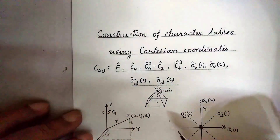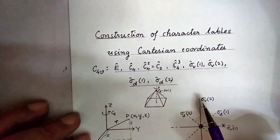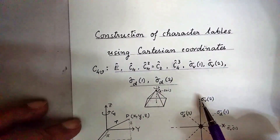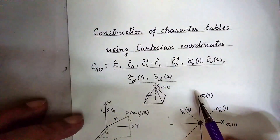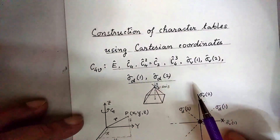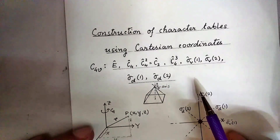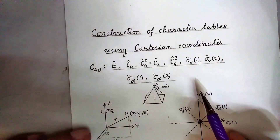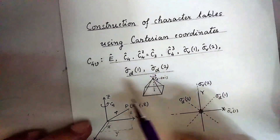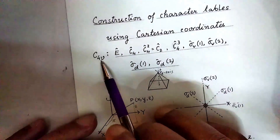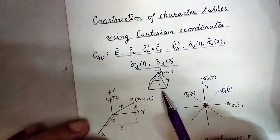In this video, I will discuss construction of character tables using Cartesian coordinates. Usually, character tables are constructed by utilizing some results of the great orthogonality theorem, but here I want to show you that a character table can be constructed in a much simpler way. For example, let us consider the C4V point group. An object belonging to such a point group is a square pyramid.